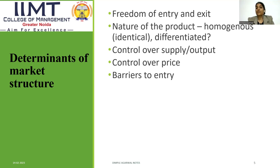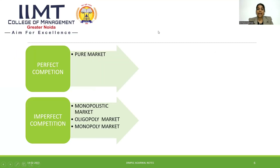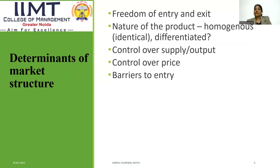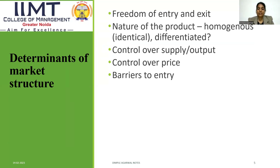The third determinant is control over supply and price. The last one is barriers to entry — whether the entry of a new entrant is restricted or not, whether they are free to enter or exit or restricted to enter or exit. We will discuss this with every market structure.